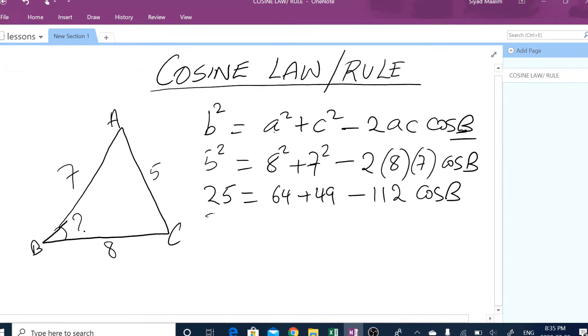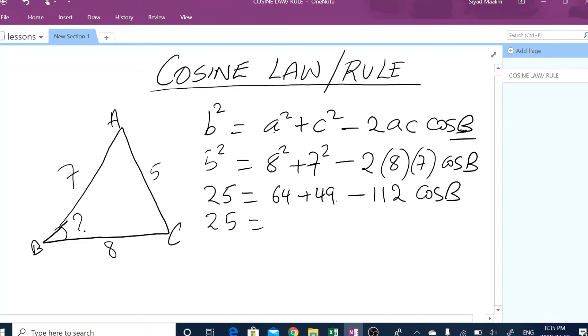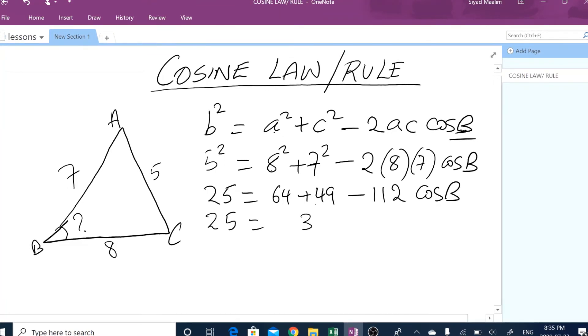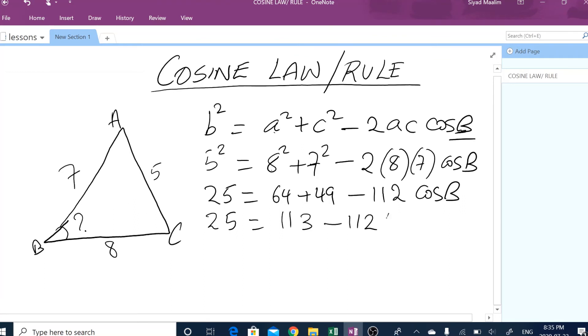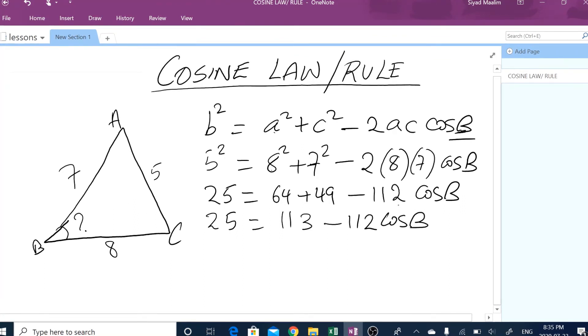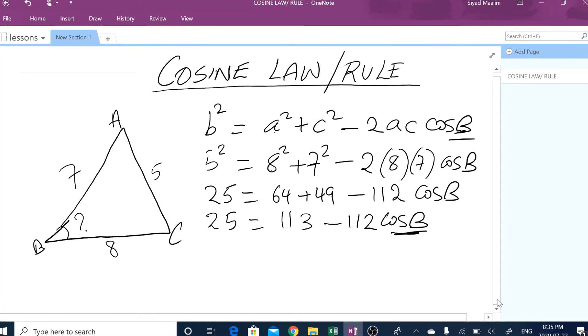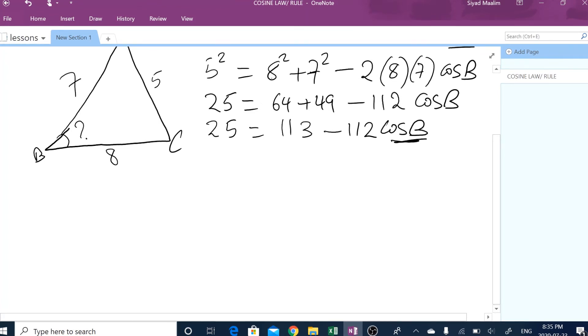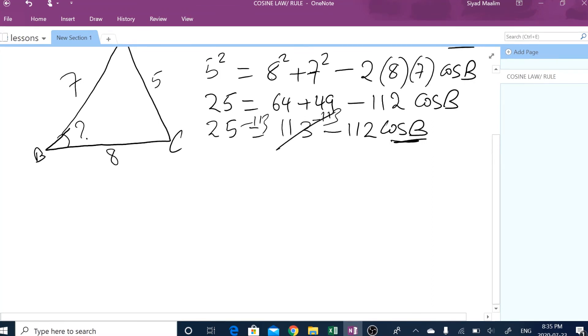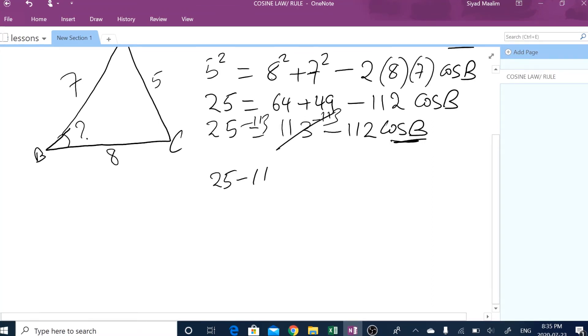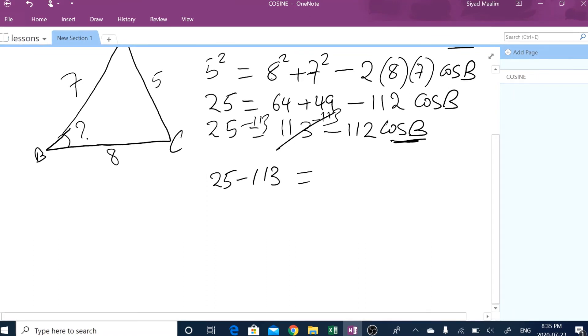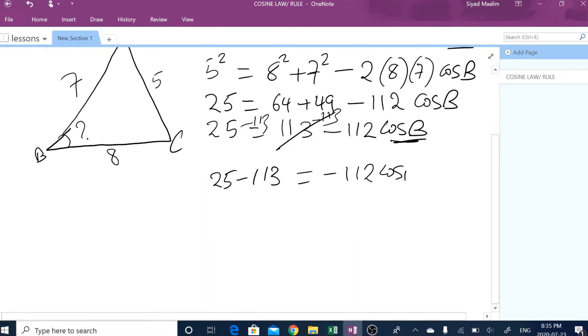So 5 squared is 25, equals 8 times 8 is 64 plus 49 minus 8 times 7 is 56 times 2, I think that is 112, cos of B. So what do you have here? 25 equals, when you add these two what do you get? That is 113 minus 112 cos B.